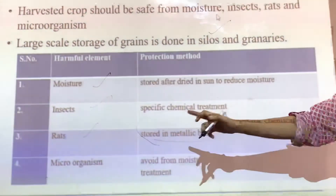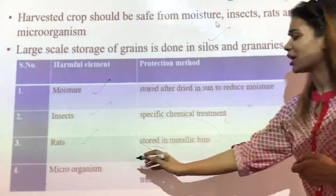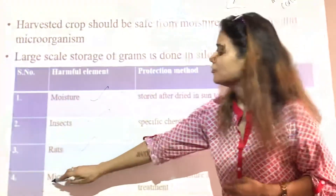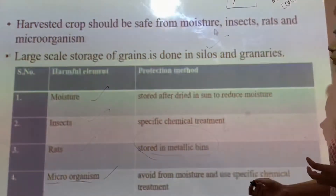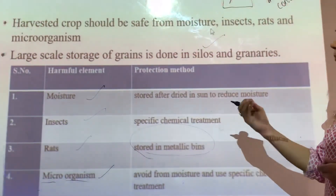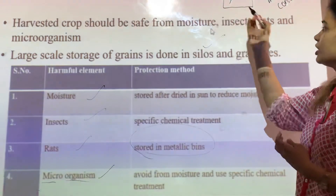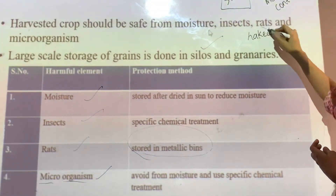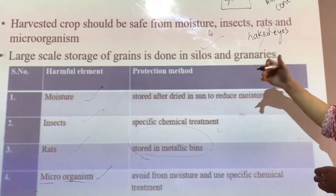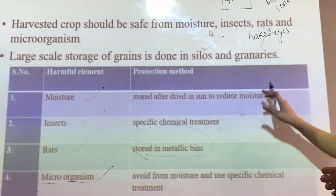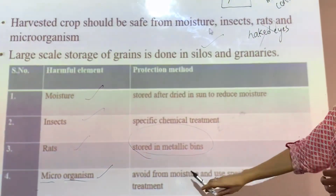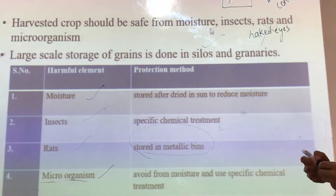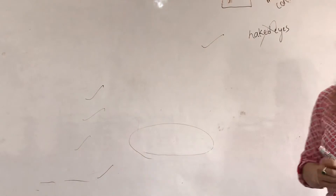Another harmful element is microorganisms — micro means very small, and organism means living beings. There are many small living beings that cannot be seen with naked eyes, but they actually do a lot of harm to crops. So we have to avoid moisture and use specific chemical treatments to get rid of these microorganisms.